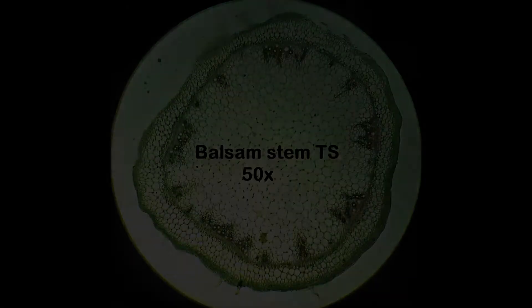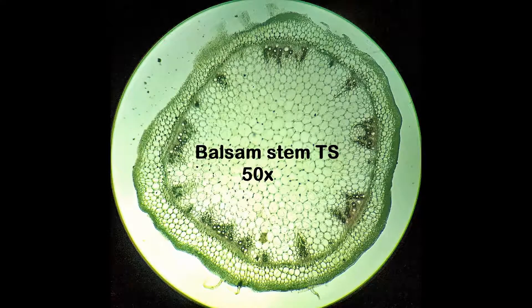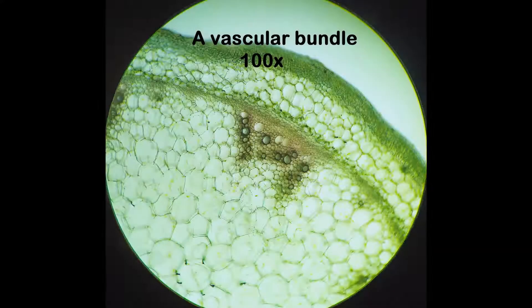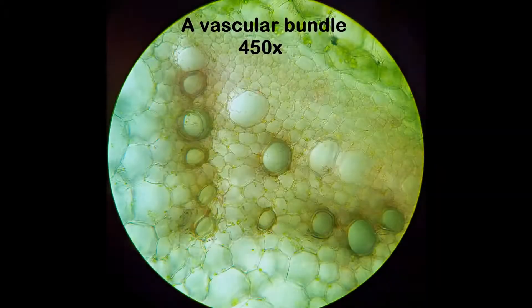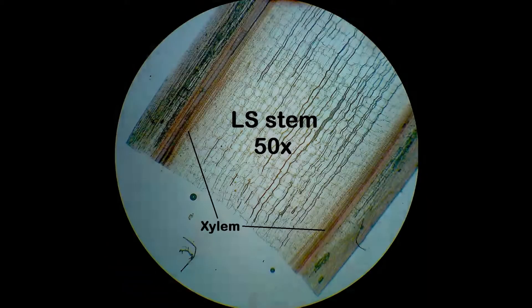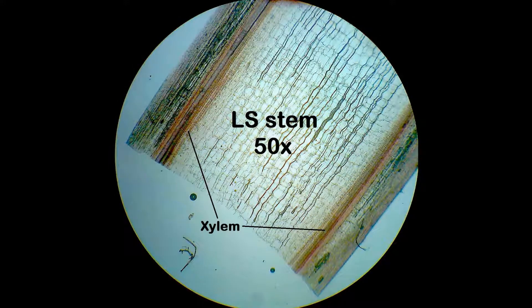You'll notice that the xylem elements within the vascular bundles of the stem appear reddish or orange in color. This experiment shows that water moves through the xylem elements in plants. This is evident from the fact that the eosin stain contained in the water is taken up by the xylem elements, thus imparting a reddish color to the same when observed under the microscope.